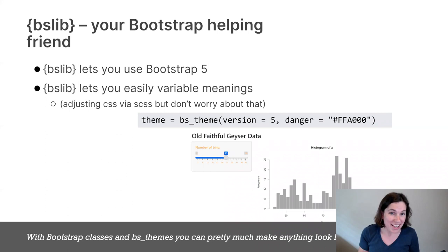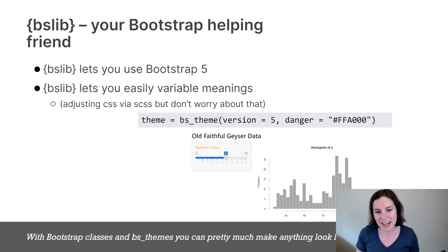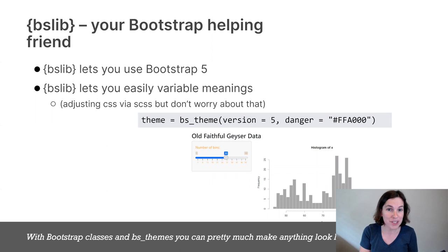BSLib is a library that helps make Shiny styling much better. You can upgrade to the latest Bootstrap by setting the version to five, which is a nice convenient thing to do. But you can also start changing the meanings of Bootstrap variables. For instance, if the word danger means red in Bootstrap, in my BS theme I can say I want danger to mean FF-A000 instead, and now the app shows orange text instead of red. This means we can add CSS styling in HTML into our Shiny app and adjust the variable meanings using the BS theme.